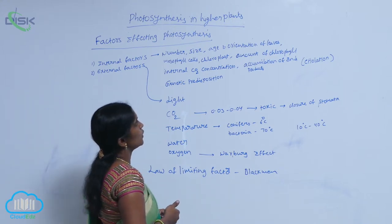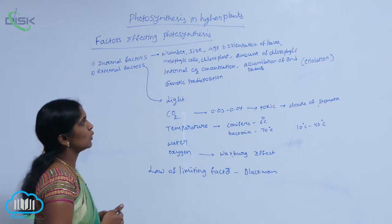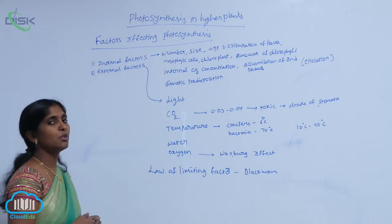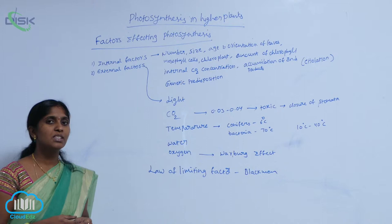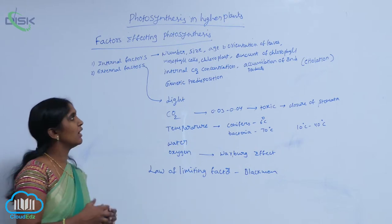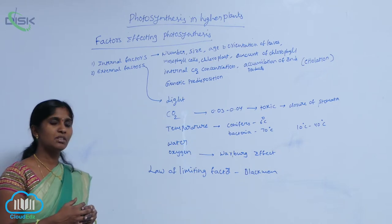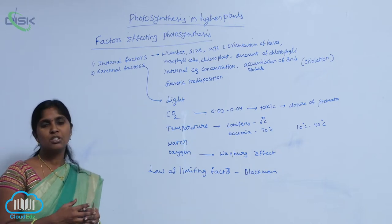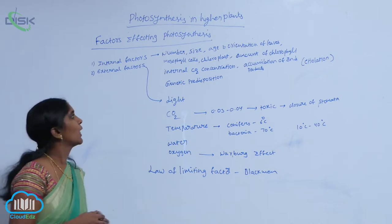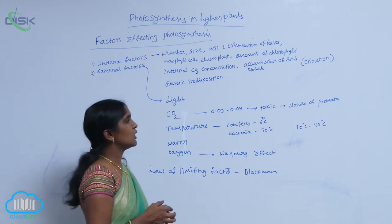Mesophyll cells, chloroplast content, and amount of chlorophyll are also internal factors. If the number of mesophyll cells is high, the number of chloroplasts is high. If the number of chloroplasts is high, the production of photosynthesis is high.